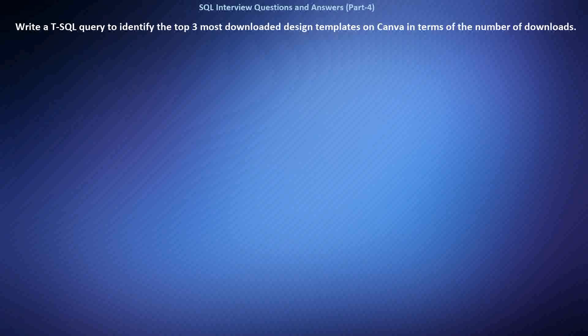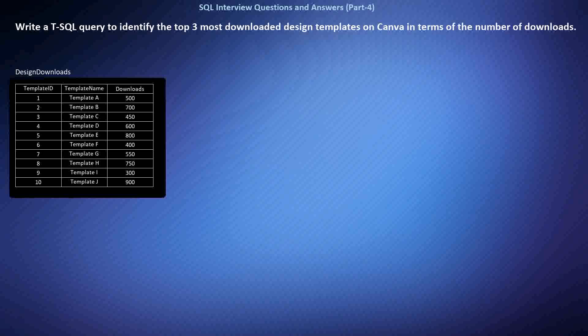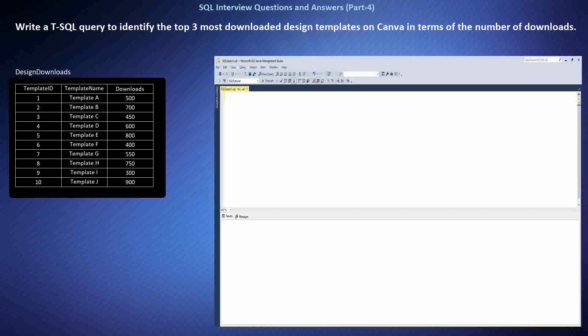Write a SQL query to identify the top three most downloaded design templates on Canva in terms of the number of downloads. We want to determine the top-performing design templates based on download counts, using a table named DesignDownloads. This SQL query selects the top three design templates based on downloads, ordering them in descending order using the ORDER BY clause and limiting results to three using the TOP keyword.